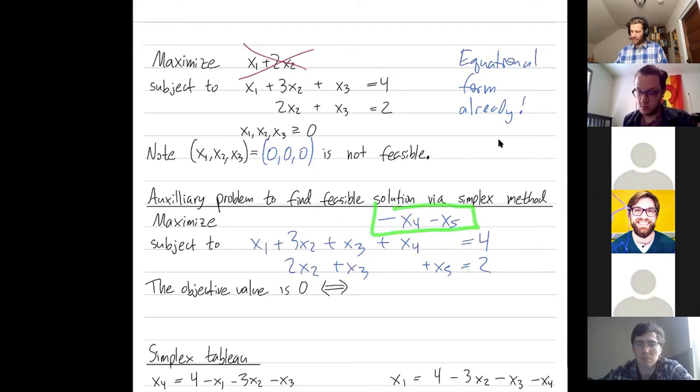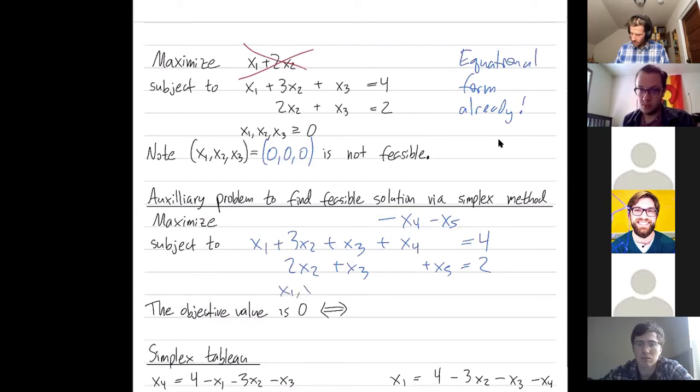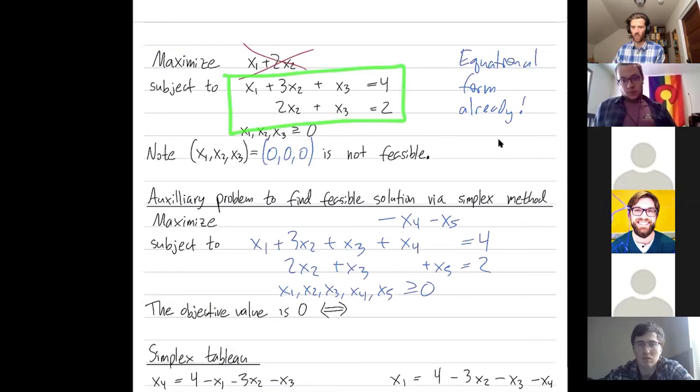If I find that what's the largest this could be? Well, x4 and x5 are still non-negative. So the best I could do here, since x4 and x5 is non-negative, the best I could do is I could get that maximum to be zero if both x4 and x5 are zero. But if I can get this to zero, then, hey, x4 becomes zero, x5 becomes zero, and then I found a starting solution to my original system of inequalities. You see that?